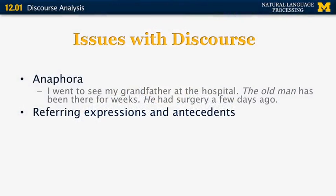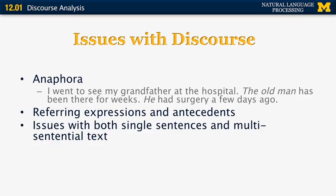One of the goals in computational discourse analysis is to be able to group those three expressions — 'my grandfather,' 'the old man,' and 'he' — into one set so that we know they refer to the same person. The two concepts here are referring expression and antecedent. The referring expression in the examples above was something like 'the old man' or 'he,' and the antecedent was 'my grandfather.' Anaphora occurs not only in multi-sentential text, but also within single sentences.